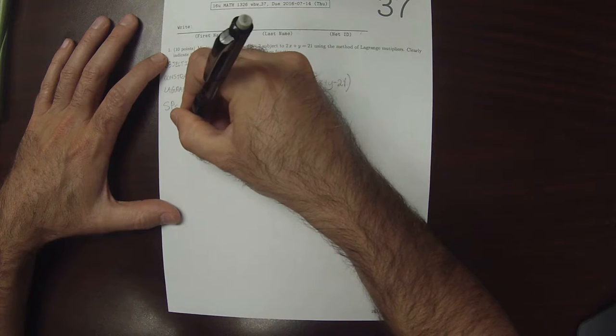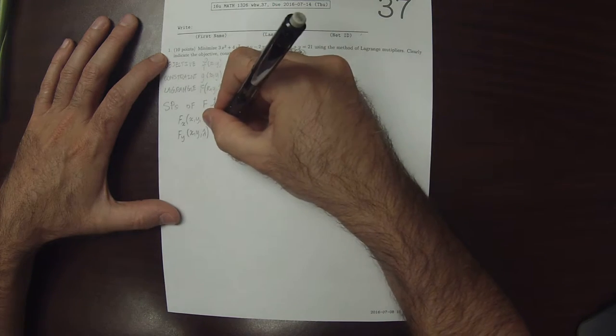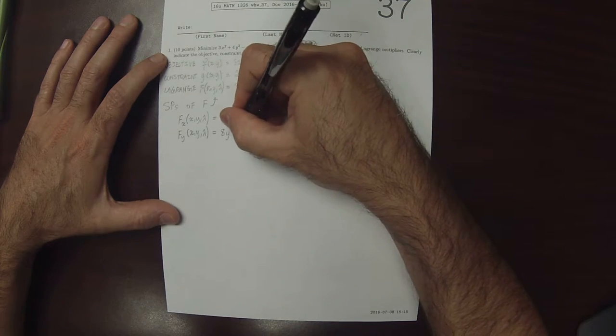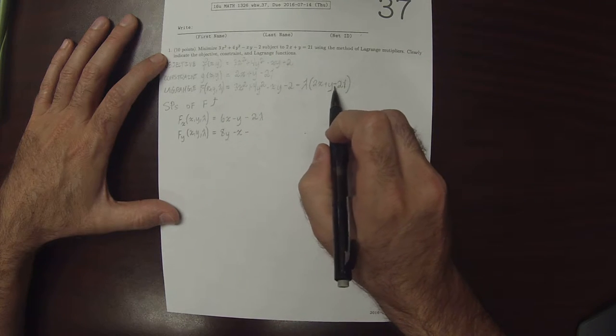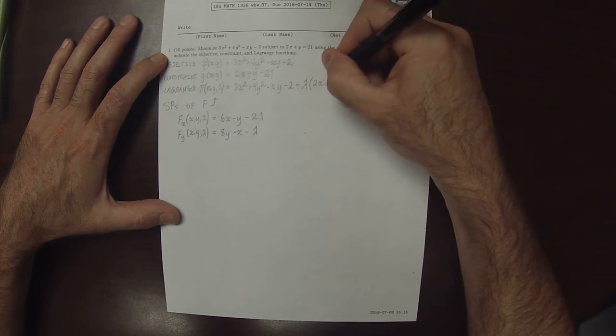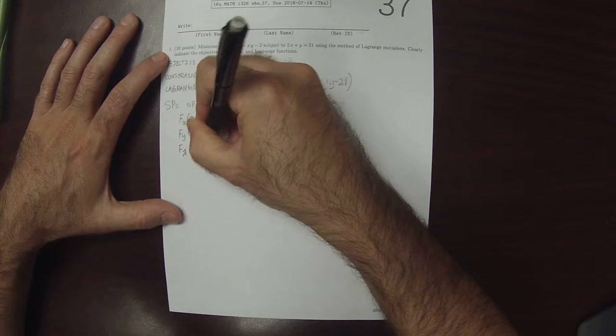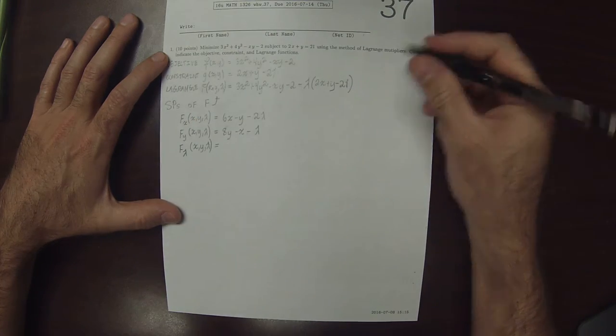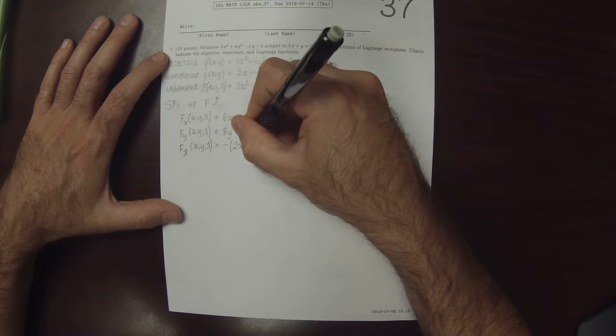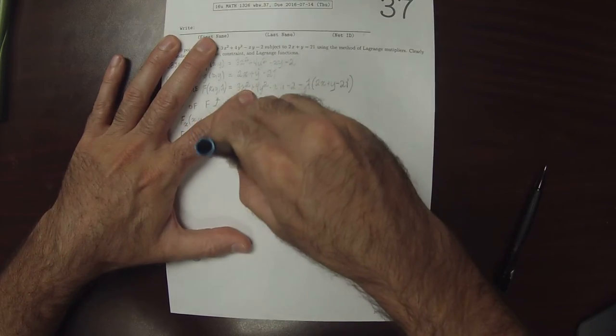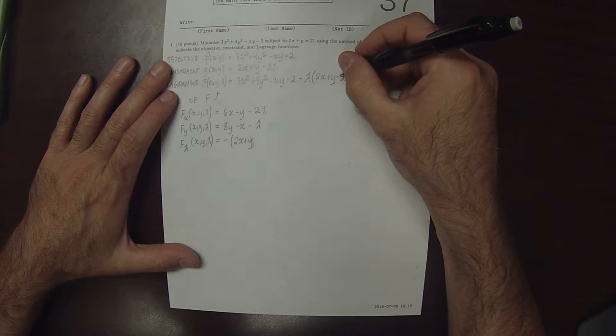The y partial of the Lagrange function, so that would be 0 plus 8y minus x, and then minus, so that lambda just hangs out. The y partial of this is 1, so minus lambda times 1. Then the lambda partial of this is just that term in round parentheses, negative 2x plus y minus 21.